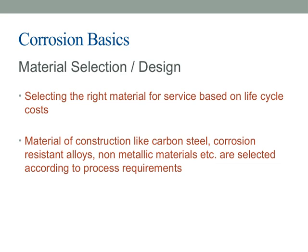When choosing materials for a project, it's crucial to consider the entire lifecycle costs — thinking beyond just the initial purchase price and looking at long-term durability and maintenance expenses. The right material can significantly reduce corrosion-related issues and extend the lifespan of equipment. Depending on the process requirements, we might select materials like carbon steel for less aggressive environments, corrosion-resistant alloys for more demanding conditions, or even nonmetallic materials when appropriate. The key is to match the material of construction to the specific process environment, ensuring optimal performance and cost efficiency over time.